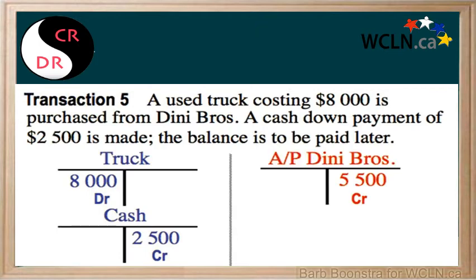We owe the remainder of the amount to Dini Brothers, so $5,500 is a credit entry to accounts payable — Dini Brothers. You will notice that $8,000 equals $2,500 plus $5,500. The account balances — debits equal credits.